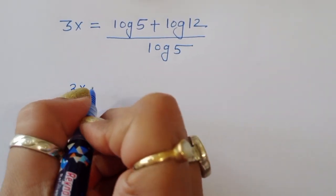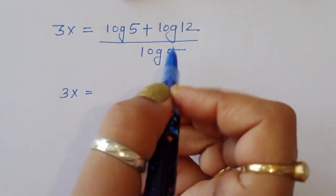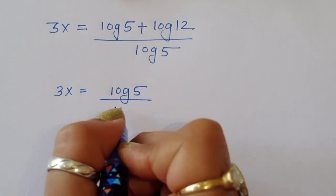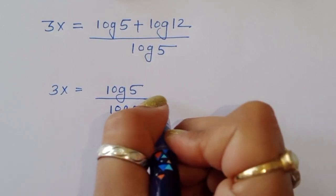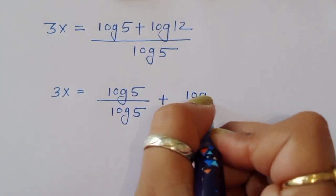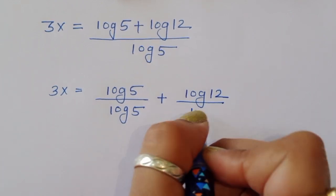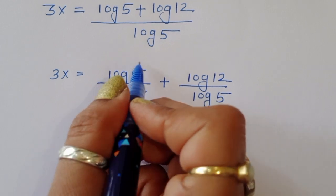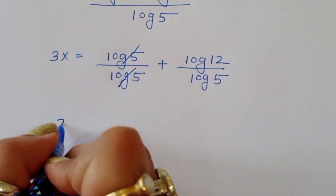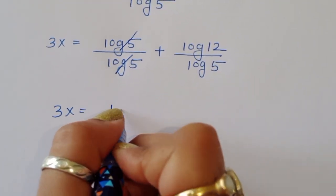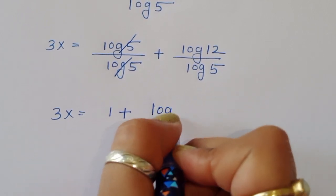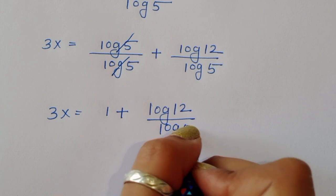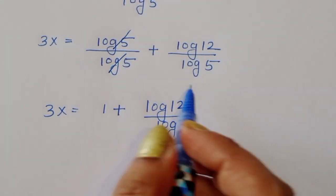Now we separate this term: log(5) divided by log(5) plus log(12) divided by log(5). Since log(5) divided by log(5) equals 1, we get 3x is equal to 1 plus log(12) divided by log(5).